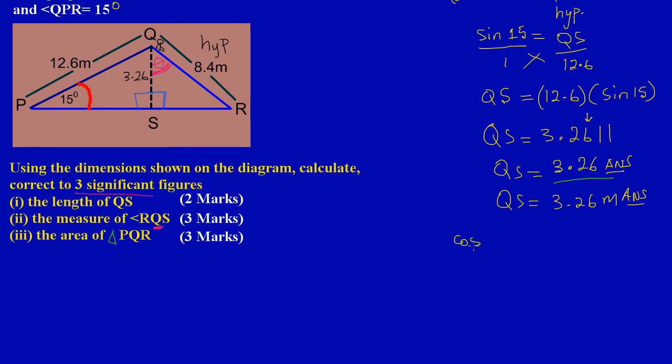We could say cos of theta, the angle we're trying to find that we've called theta, must be equal to the adjacent over the hypotenuse. We could substitute: cos of theta equals the adjacent which is 3.26 over 8.4.